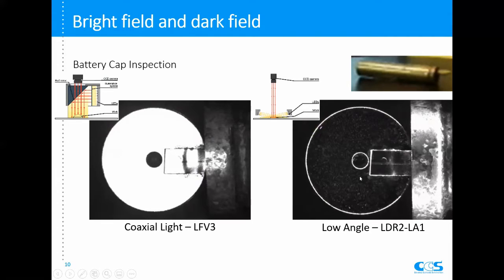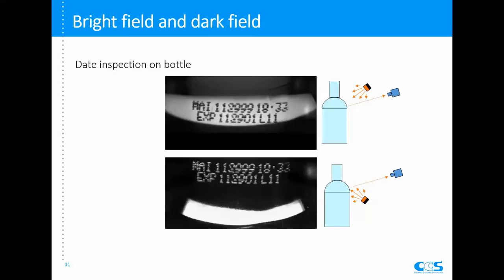Bright field and dark field is really about the position relationship between the camera and the light — whether the direct reflection light will reach the camera or not. From the examples, we can see that bright field and dark field give opposite images, but in most cases both images will work. So when should we use bright field and when should we use dark field? Here's one example.